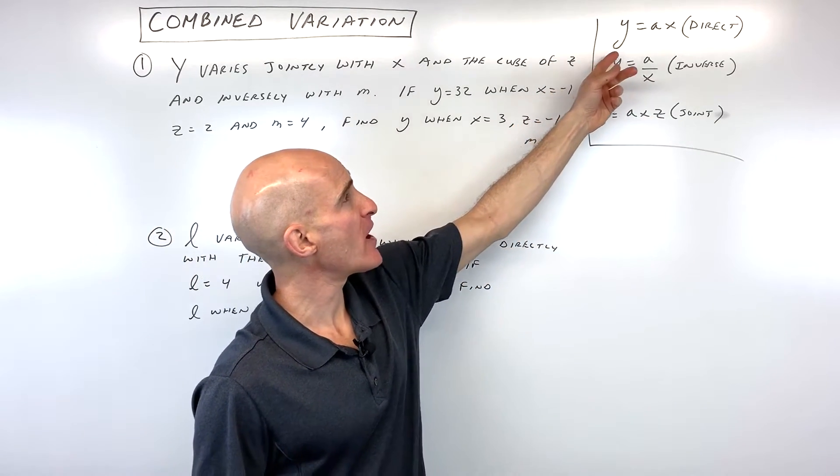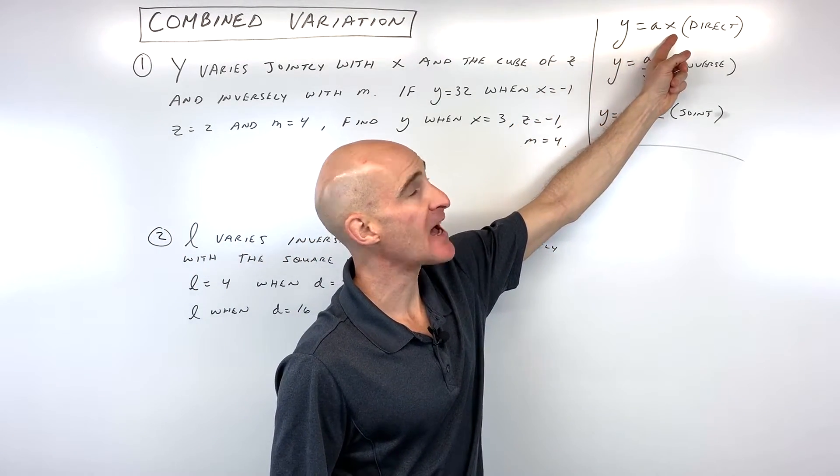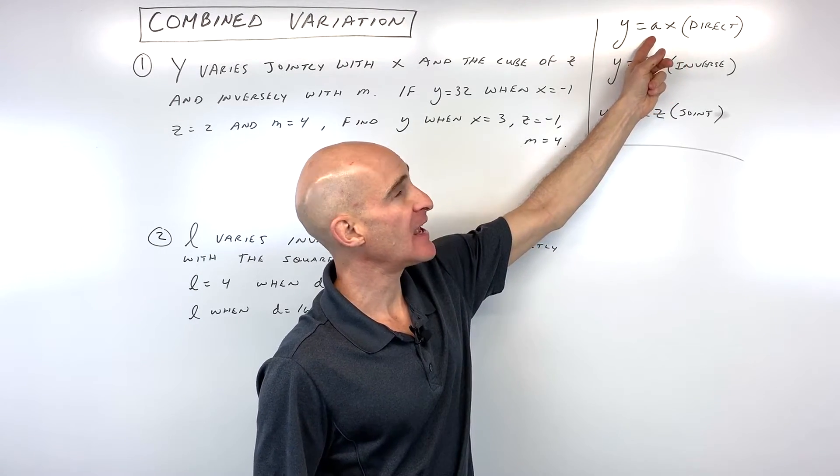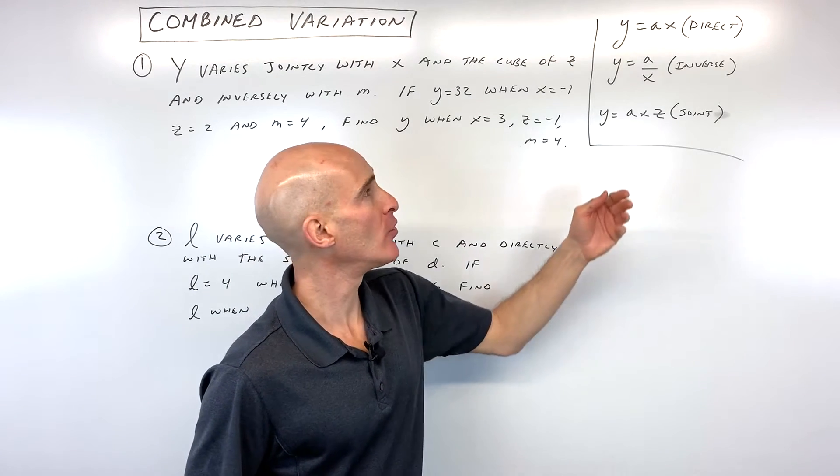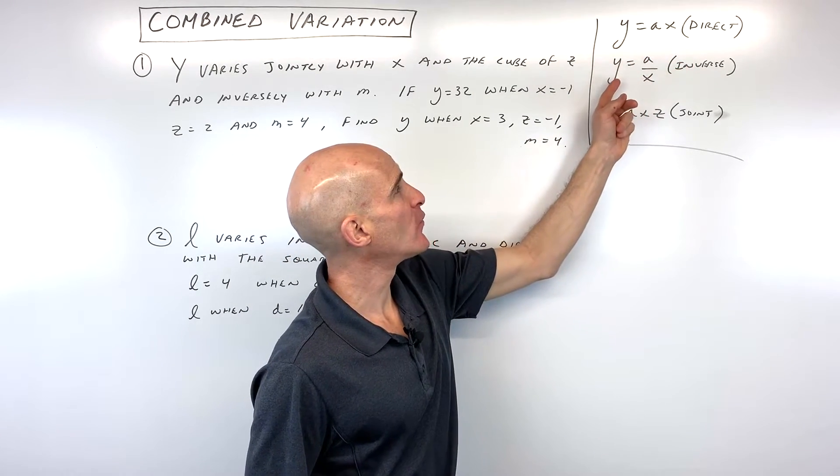Just to quickly refresh, direct variation is in the form y equals a times x. Notice that the a is your constant of variation. Some books like to use the letter k or even another variable. But y and x, you can see they're varying directly when they're in this form.